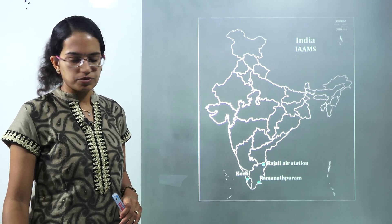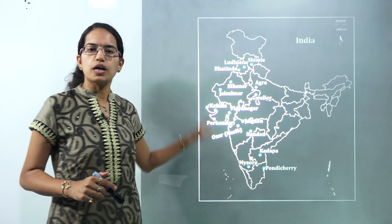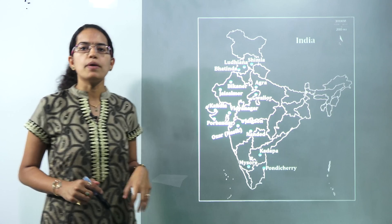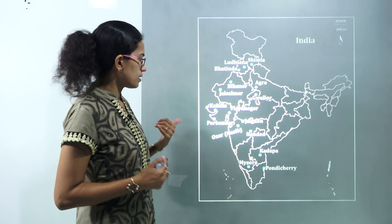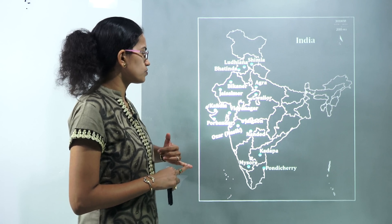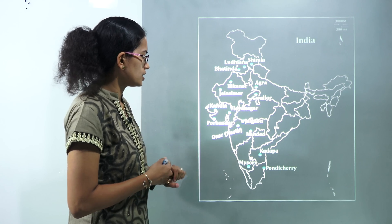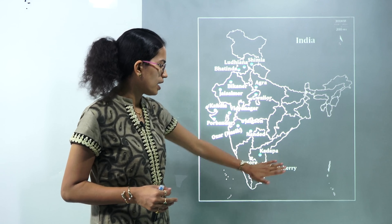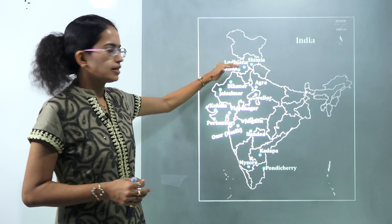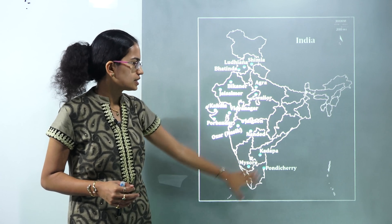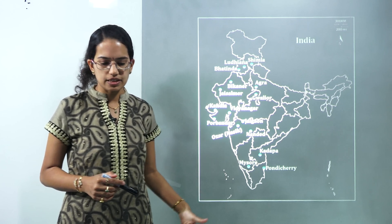The next important location covers the 16 new regional connectivity airports that have come under the Udan scheme. The important ones among these include Vidyanagar, Jalgaon in Maharashtra, Kadappa, Bhatinda, and Ludhiana. These are part of the list of 16 new airports under the regional connectivity scheme.